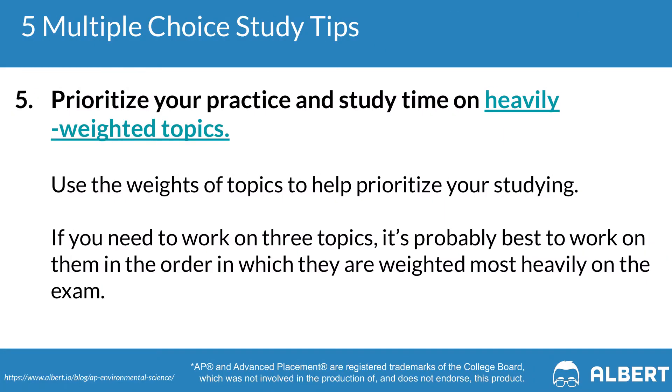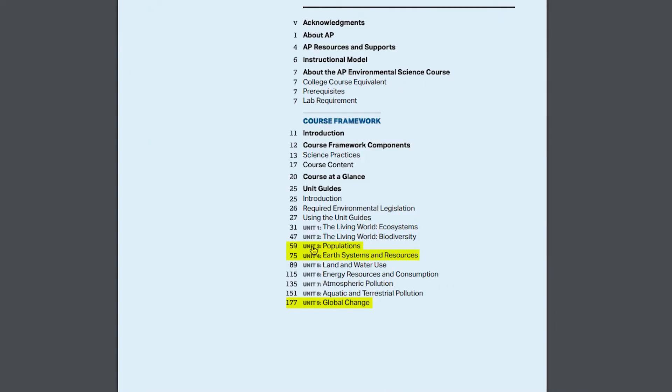Tip five is to prioritize your study time on heavily weighted topics. Three units appear more frequently on the APES exam: unit nine (global change), unit three (populations), and unit four (earth systems and resources). If you're short on study time, focus on these three units — it'll pay bigger dividends than focusing on other areas.